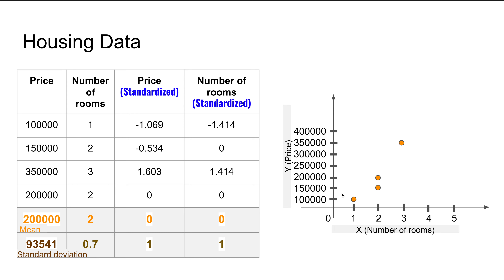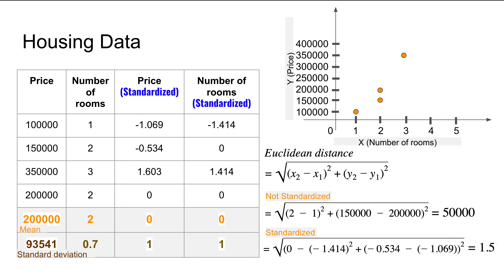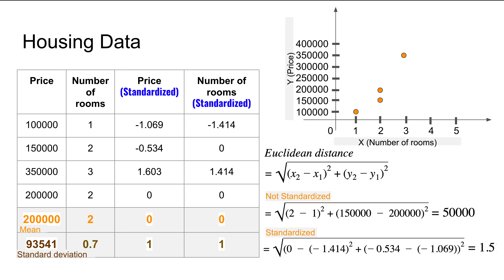If you plot these features, the y-axis is considerably larger for the non-standardized version. When calculating Euclidean distance without standardization — for example, (2−2)² + (150,000−200,000)², square-rooted — we get around 50,000. That puts much more emphasis on price and very little on number of rooms. After standardizing, the Euclidean distance is around 1.5, giving both features equal opportunity, which is desirable.